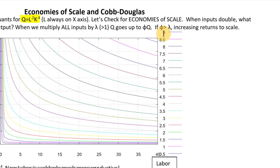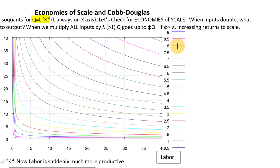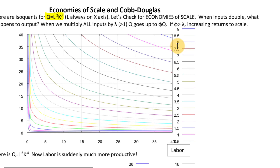If phi is greater than lambda, we have increasing returns to scale — the amount we multiply our output by is greater than the amount we multiplied our inputs by. That's the definition of increasing returns to scale. Now to check this, there are several different ways. Let's start simply and move to something more complicated as we go.